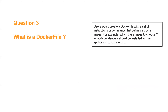Question three: what is a Dockerfile? In simple words, a Dockerfile is a file with a set of instructions or commands that defines a Docker image. You write a Dockerfile specifying the base operating system, the dependencies to install, and any files to copy. Then you build this Dockerfile to get a Docker image, and using a docker run command on that image you generate a container.